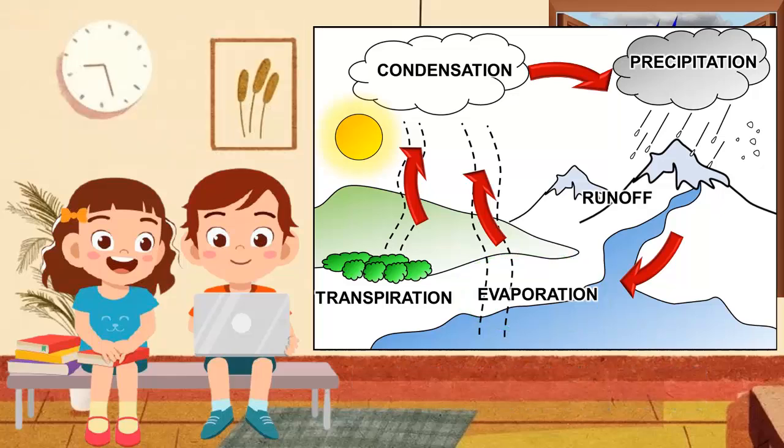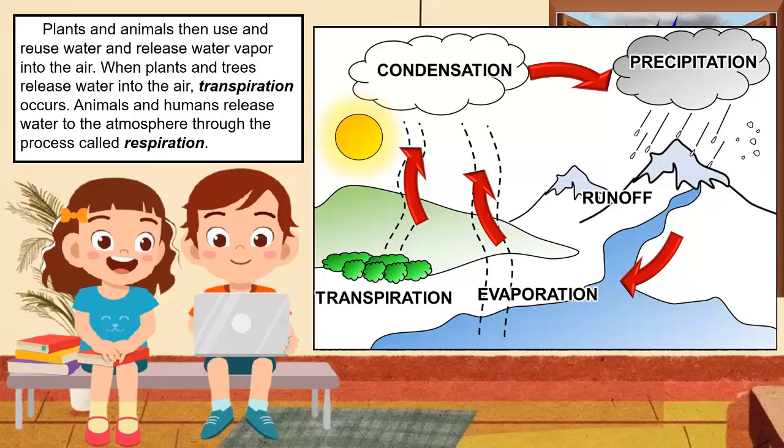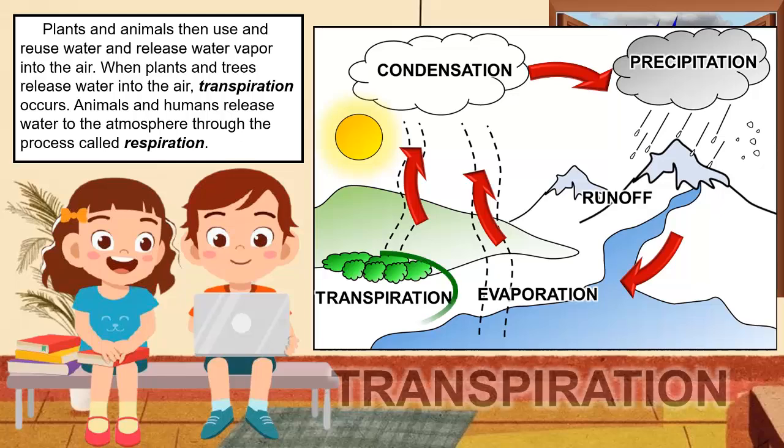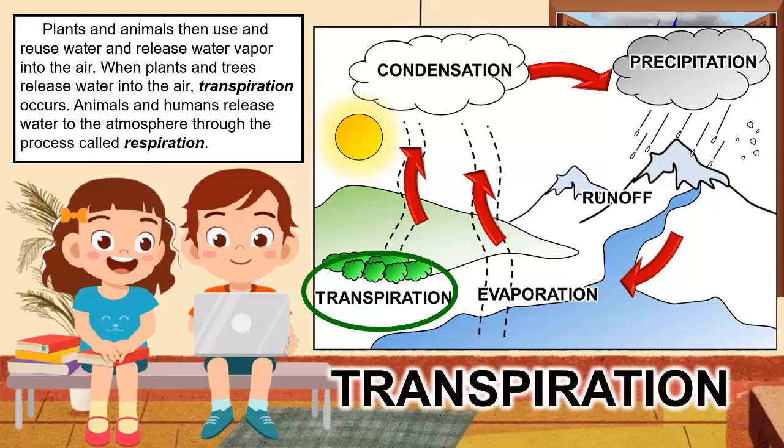Plants and animals then use and reuse water and release water vapor into the air. When plants and trees release water into the air, transpiration occurs. Animals and humans release water to the atmosphere through the process called respiration.